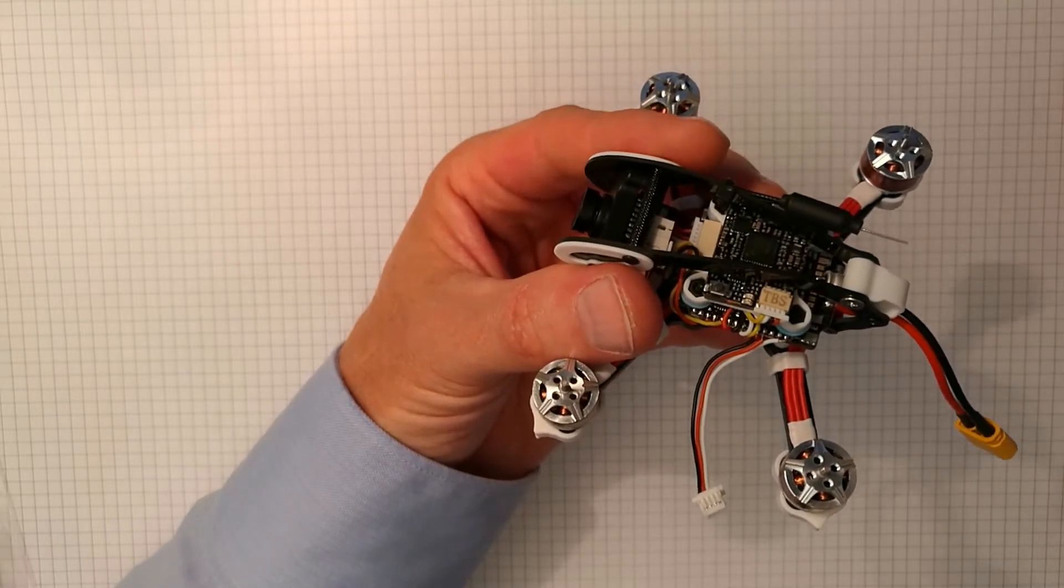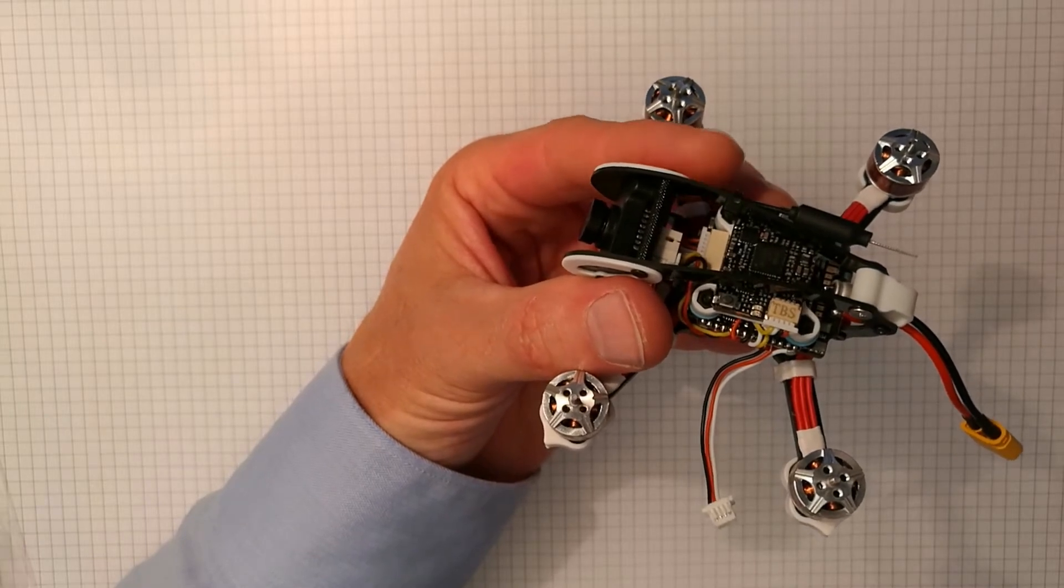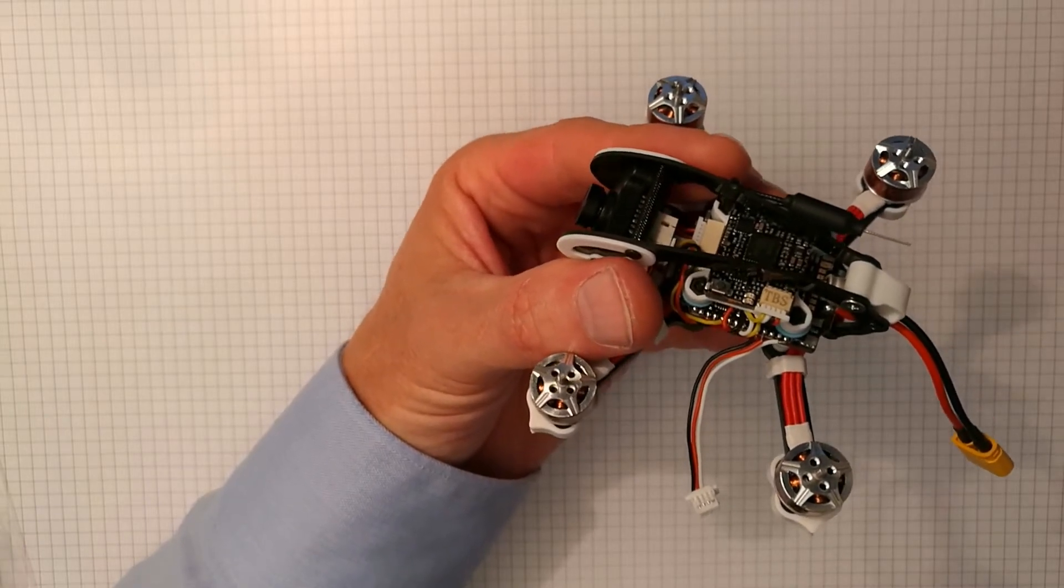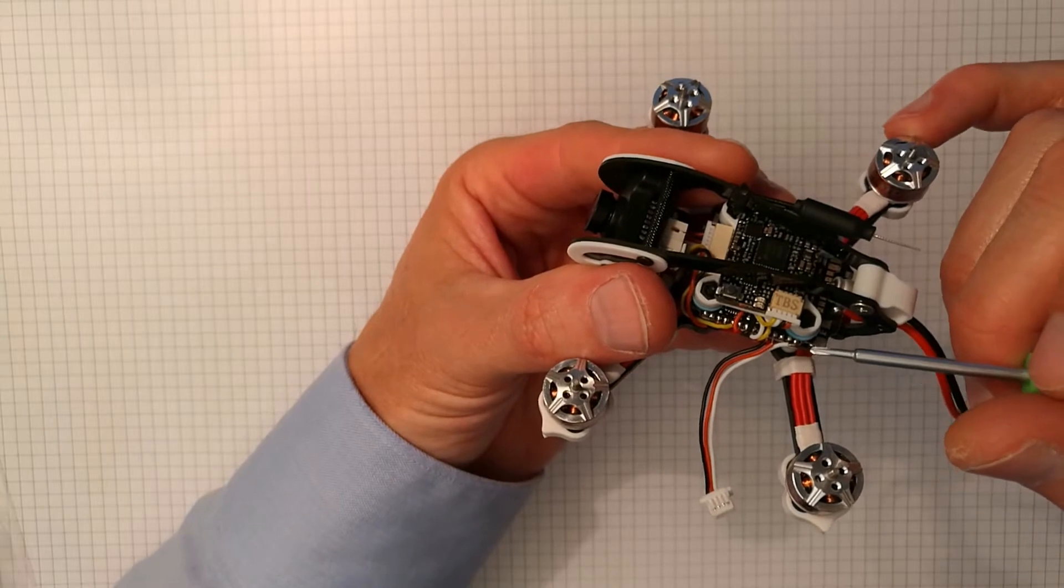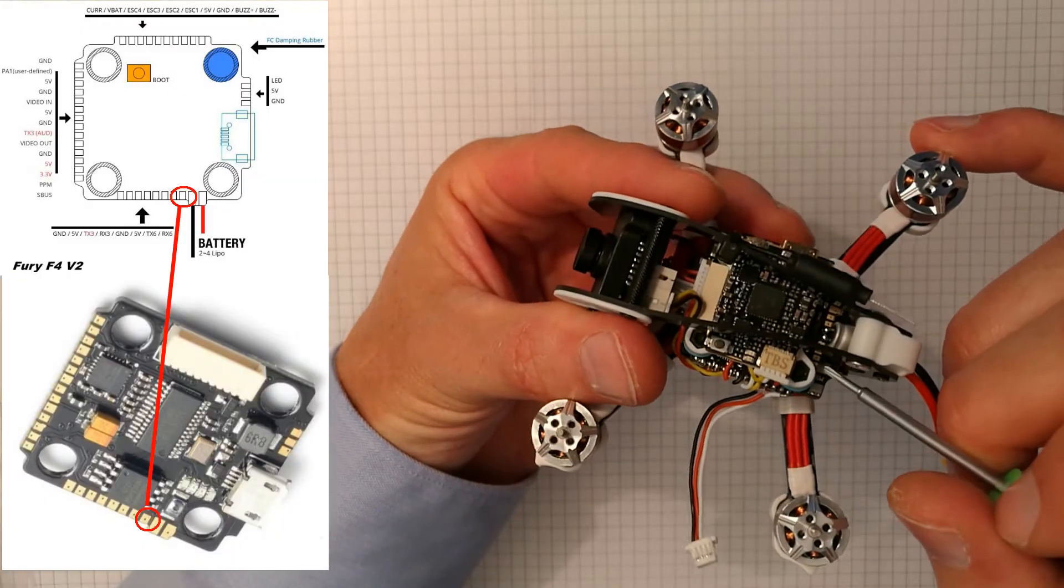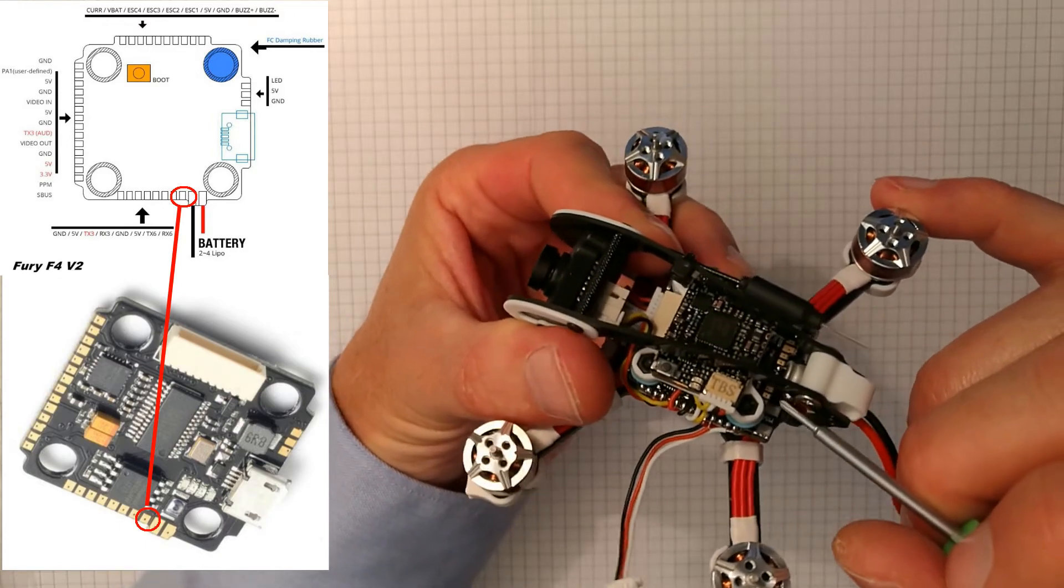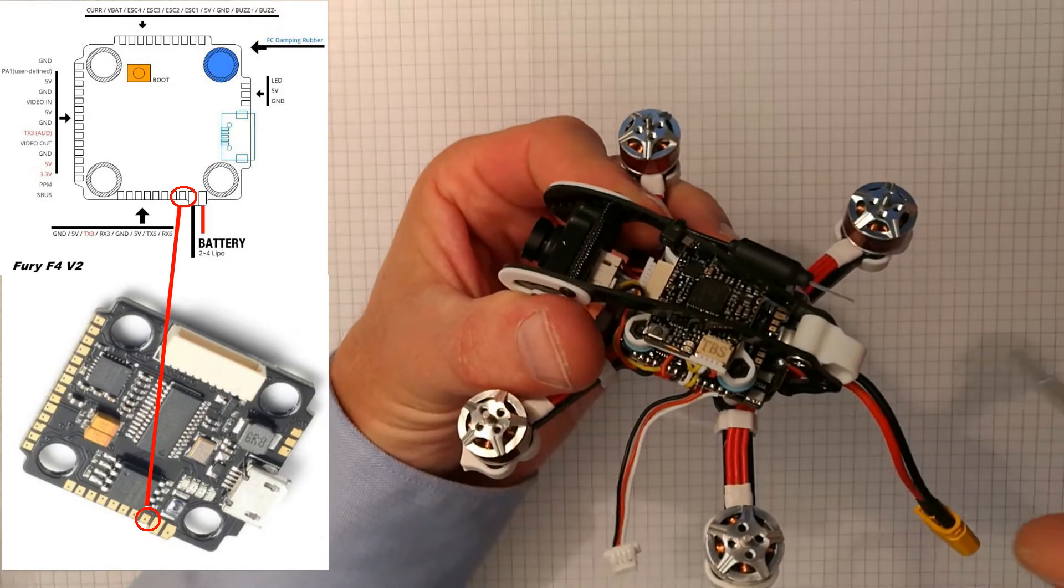But if you're going to install a FlySky receiver running the IBUS protocol, which is a non-inverted protocol, you will need to re-solder this white signal cable to UART 6, which is one of those pads on the backside of the flight controller here.